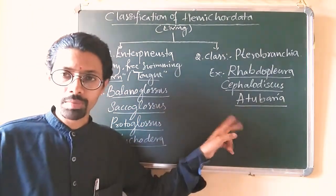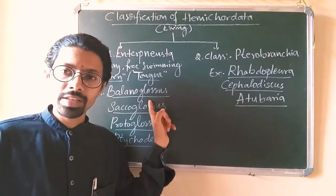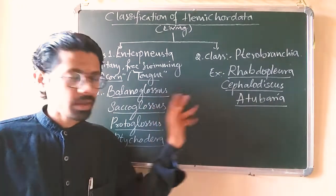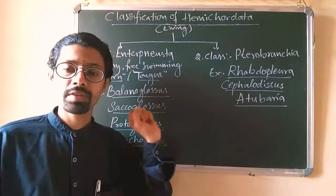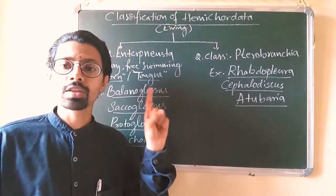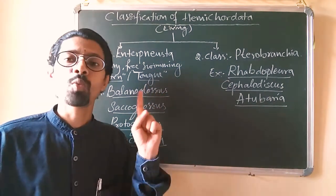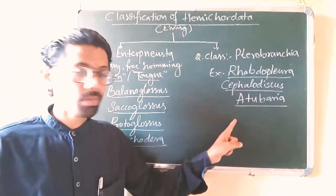Digestive system is U-shaped and here gills are U-shaped, clear. Also, remaining things are common—that is reproduction—but the difference is in gonad again. Gonad is either single gonad or only one pair of gonad. In Pterobranchia, they have single gonad or one pair of gonad.